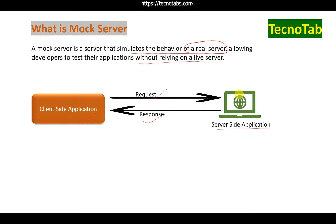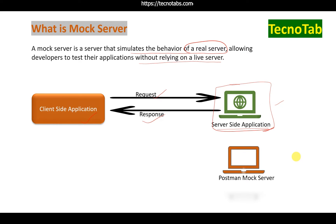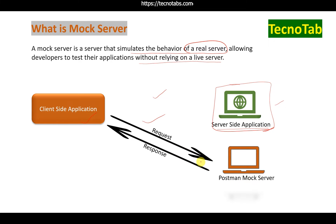But what happens if your server-side code is also under development, or for some reason it is not working — maybe a network problem or some other kind of issue? In that case, are you going to stop your development? That would be a very bad idea. So the mock server comes into picture. It says: instead of sending your request to the server-side application, just send the request to me, and I will send you the same response that your server side would have generated. So we are going to fake this server-side application with a Postman mock server.